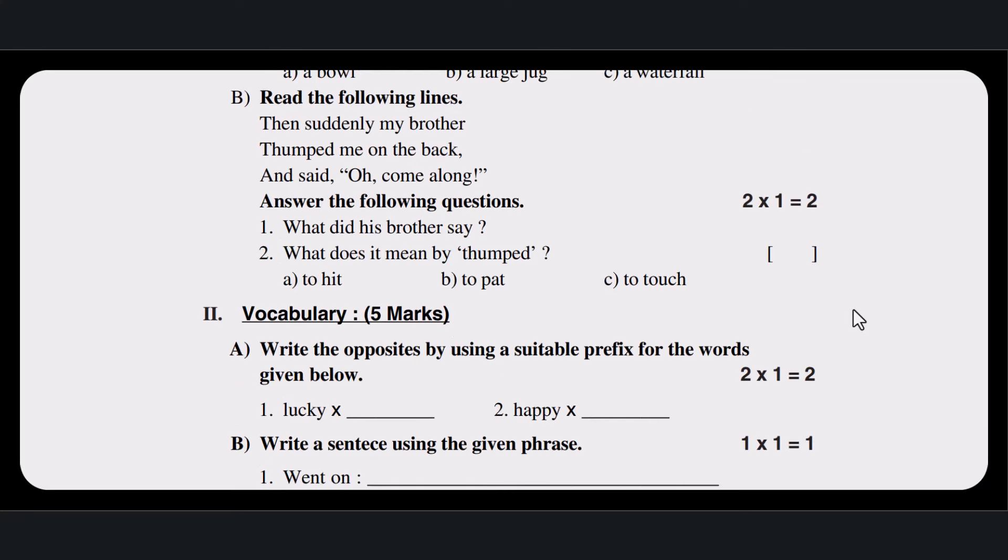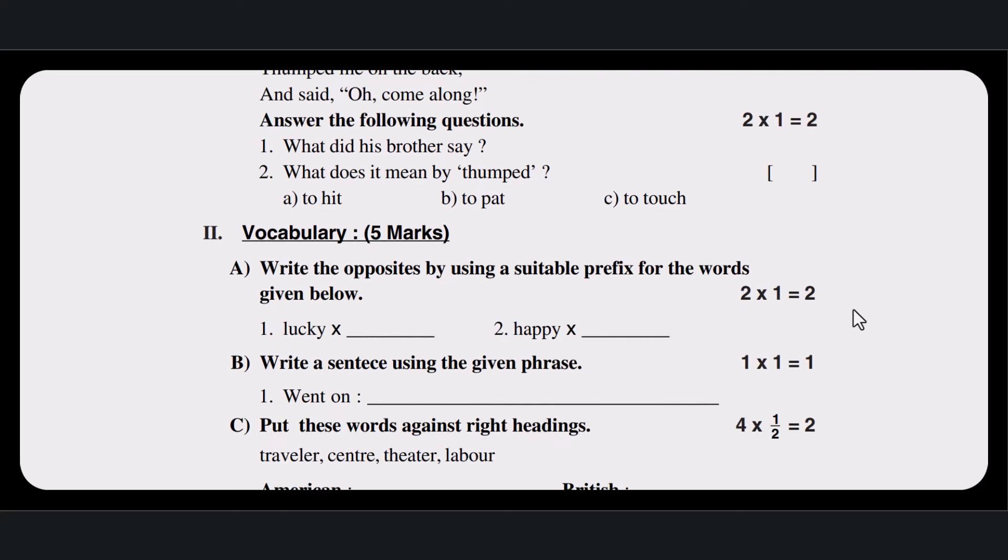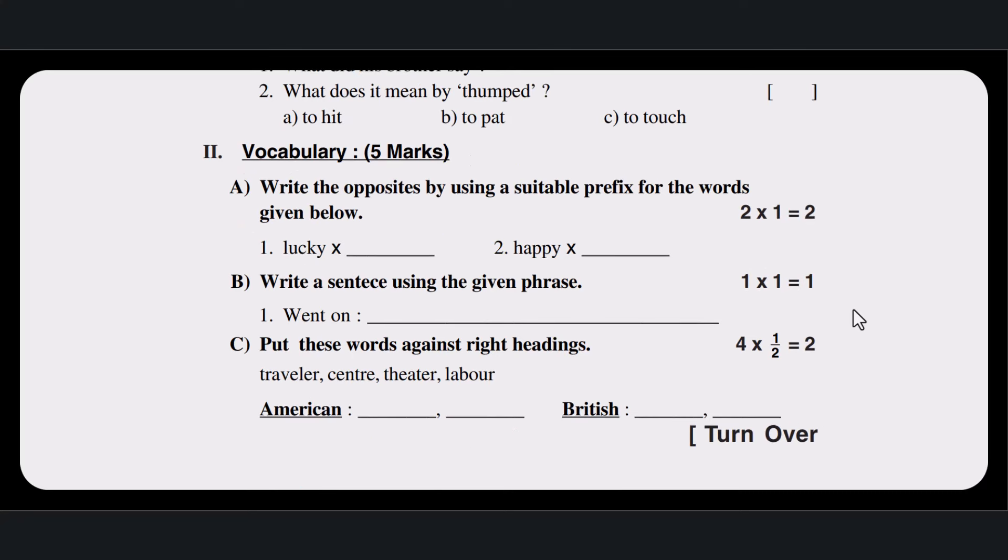Section two is worth five marks total. Part A of section two has two marks. The B part of the section has one mark, and the C part of the section has two marks.